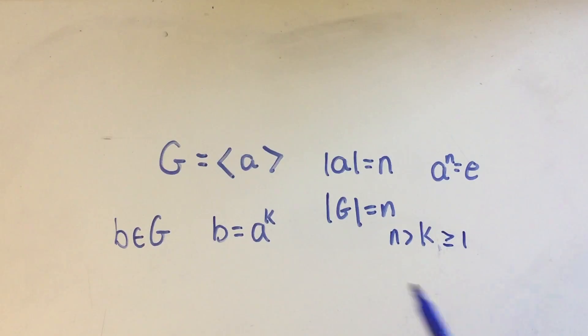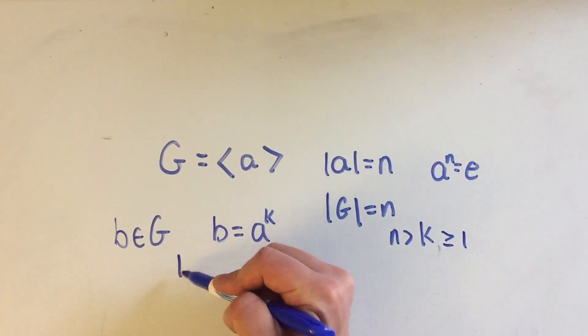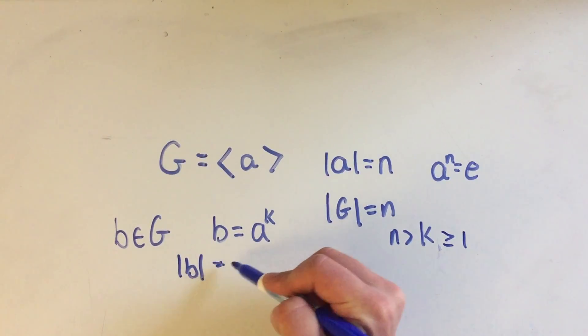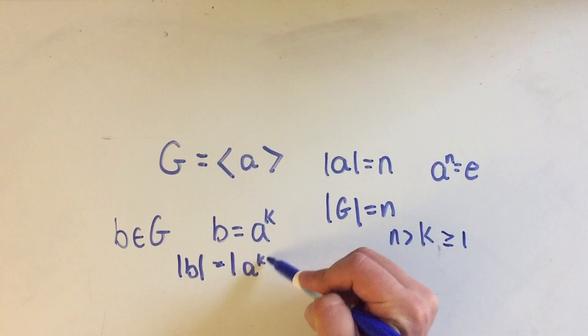And I need to make a little bit of room here. Actually, I think I'm okay. Okay, so we have that B is some power of A to the K. Well, that means that the order of B is equal to the order of A to the K.